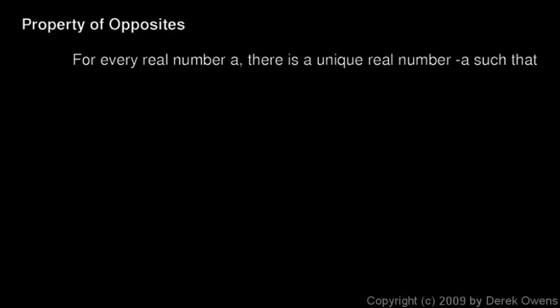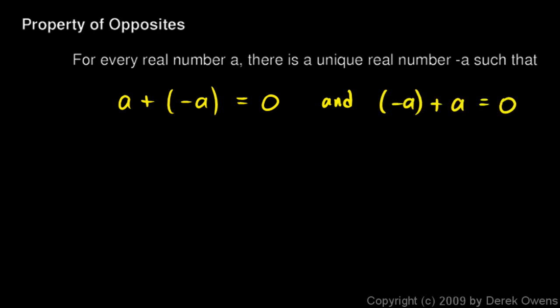We'll also state the property of opposites, which says that for every real number a, there's a unique real number negative a such that a plus negative a is equal to zero. In other words, if you add a number and its opposite, you always end up with zero. That seems obvious, but it's worth stating because it helps clarify exactly what negative numbers are — and negative numbers are important too. You could also state this as negative a plus a equals zero; either way is the same thing.